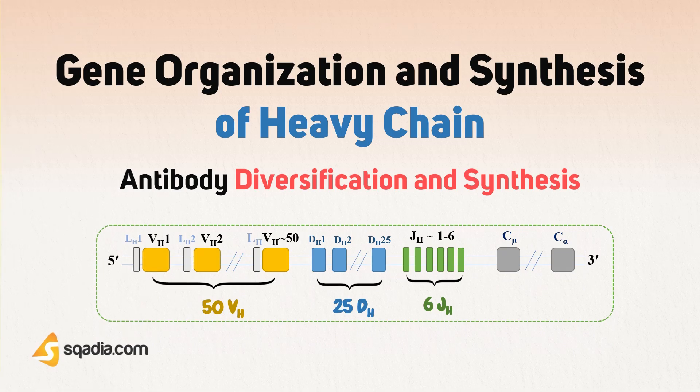Now let's look at how different variations come in different antibody molecules during this process. We already know that somatic hypermutation plays its role in this diversification. Let's see how it works by understanding gene organization and synthesis of heavy chain.